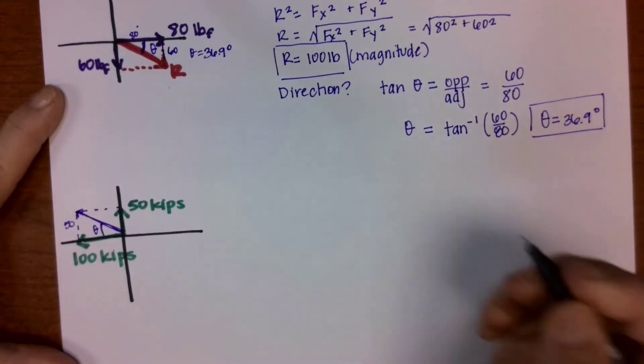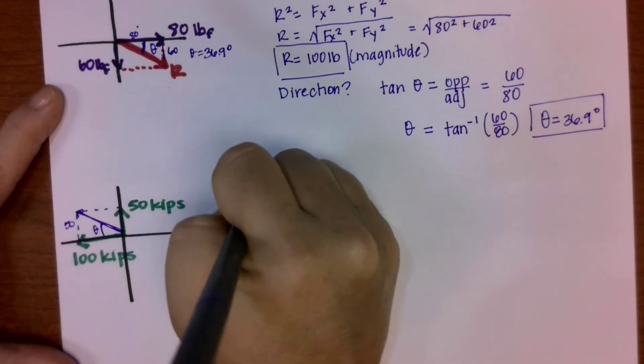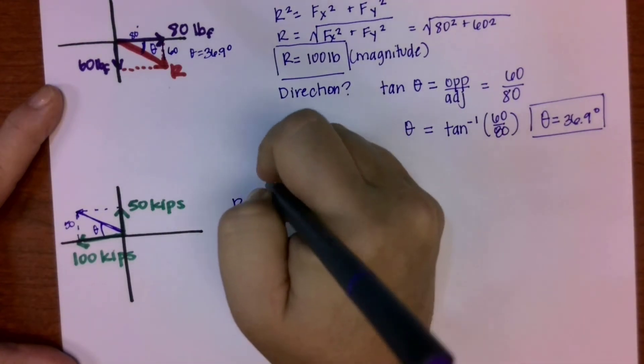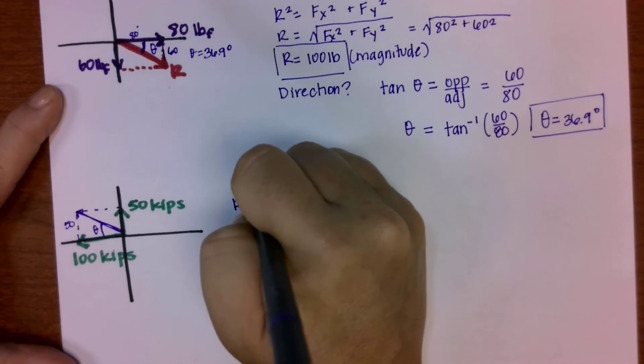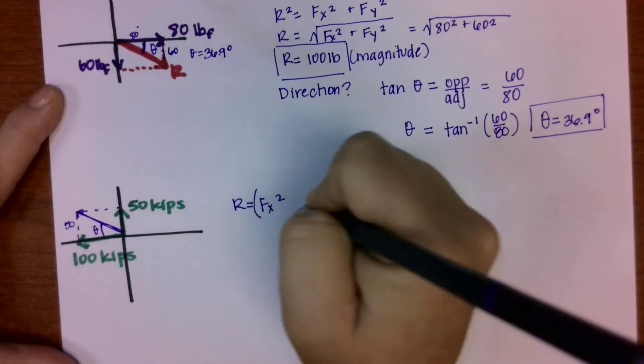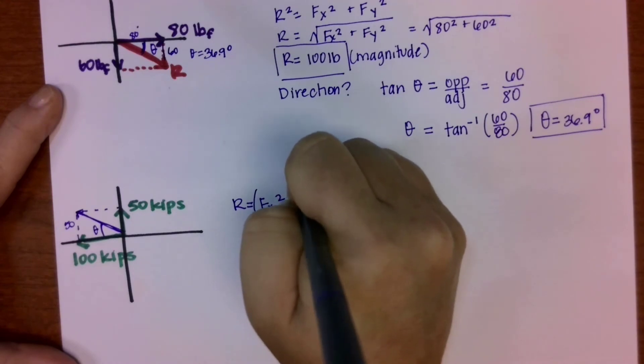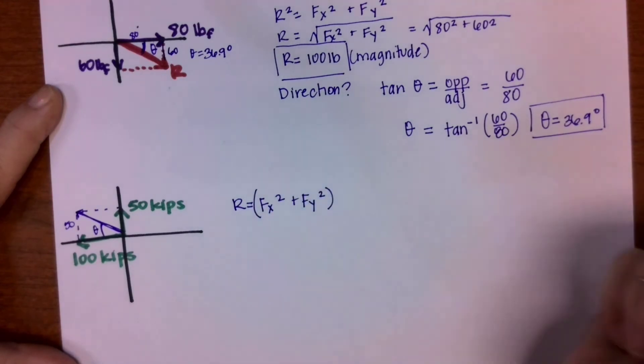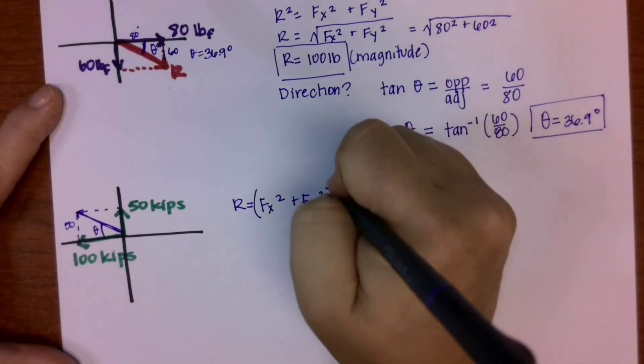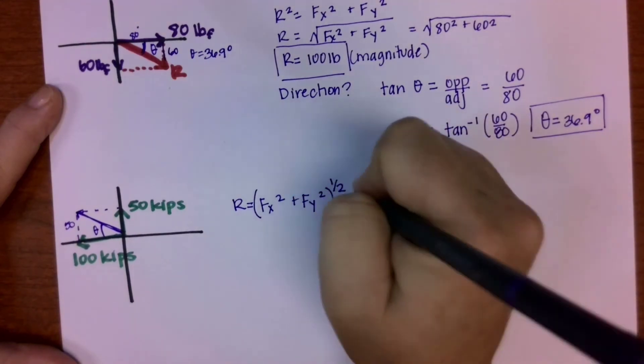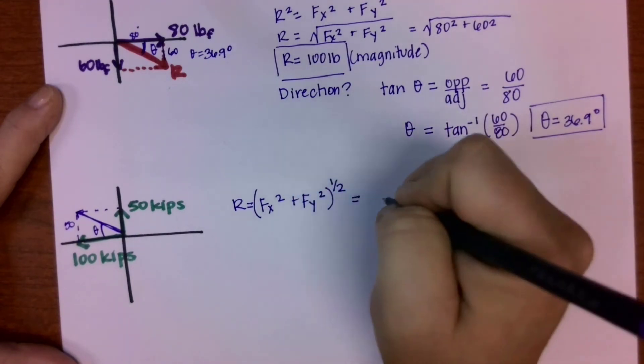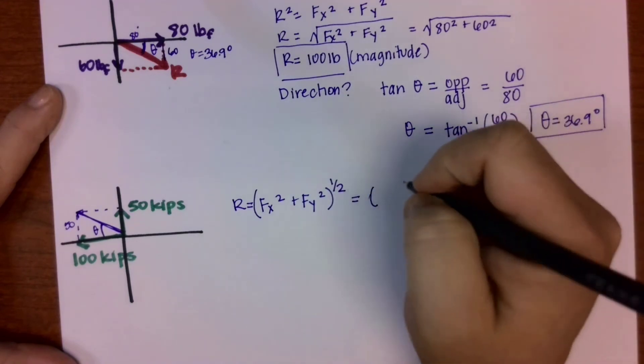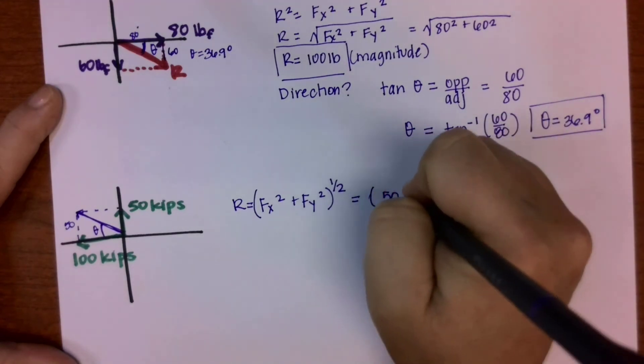The adjacent side is 100 kips, and the opposite is 50. So now I'm going to use that same procedure to find the resultant. Remember the way I'm doing it, I'm showing you every time how to find the angle from the x-axis, just to keep it consistent and make it less confusing for you.